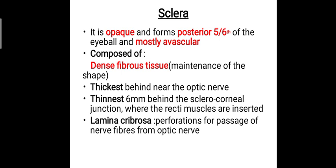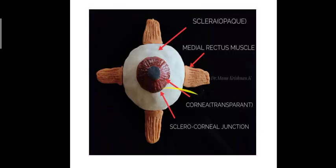The sclera is the opaque part and forms the posterior five-sixths of the eyeball. It is mostly avascular and is composed of dense fibrous tissue, which helps in the maintenance of shape. It is thickest behind, near the optic nerve, while thinnest 6 mm behind the sclerocorneal junction, where the recti muscles are inserted.